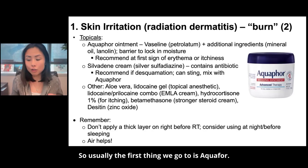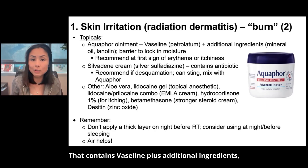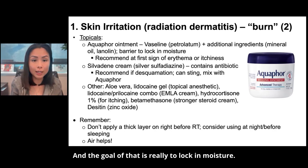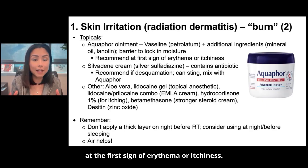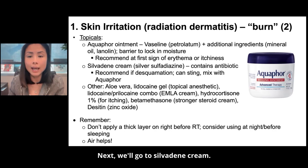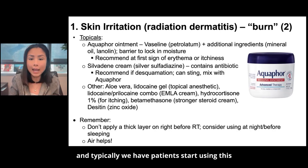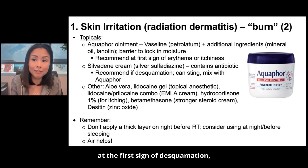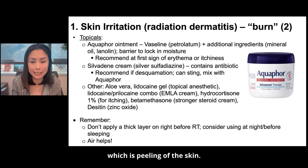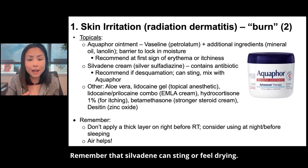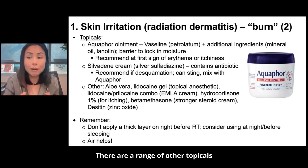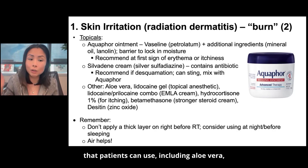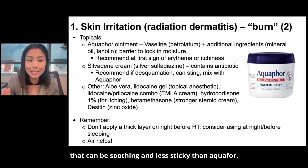What about topical treatment? Usually the first thing we go to is Aquaphor. That contains Vaseline plus additional ingredients — mineral oil and lanolin — and the goal is really to lock in moisture. We typically recommend this at the first sign of erythema or itchiness. Next, we'll go to Silvadene Cream, which contains an antibiotic to prevent infection. We typically have patients start using this at the first sign of desquamation, which is peeling of the skin. There are also other topicals, including aloe vera, which can be soothing and less sticky than Aquaphor.